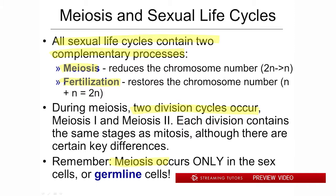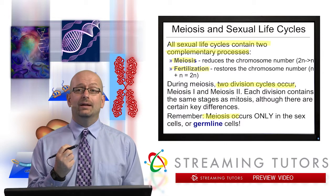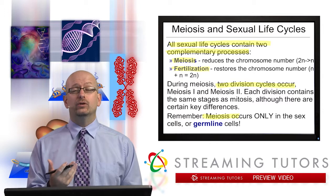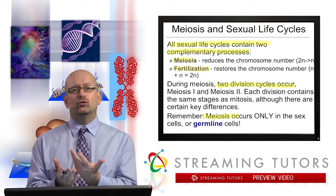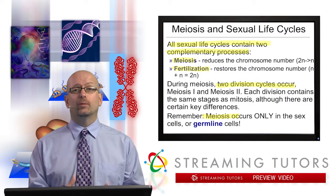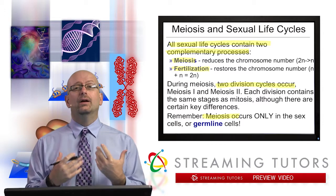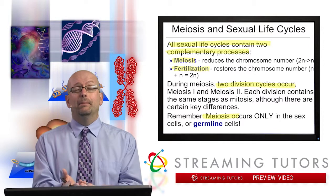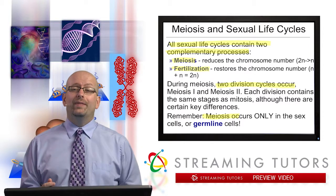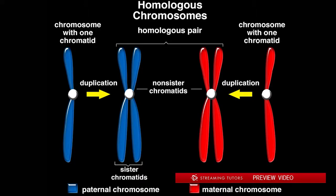Meiosis only occurs in sex cells — cells that are going to give rise to gametes. These are often referred to as the germ or germline cells. Germline is really the opposite of the term somatic. Somatic cells and germline cells together make up all of the cells. The germline are those cells that will make more cells that will create future generations. Now let's look back on a concept we touched on last time that is vital for understanding meiosis.